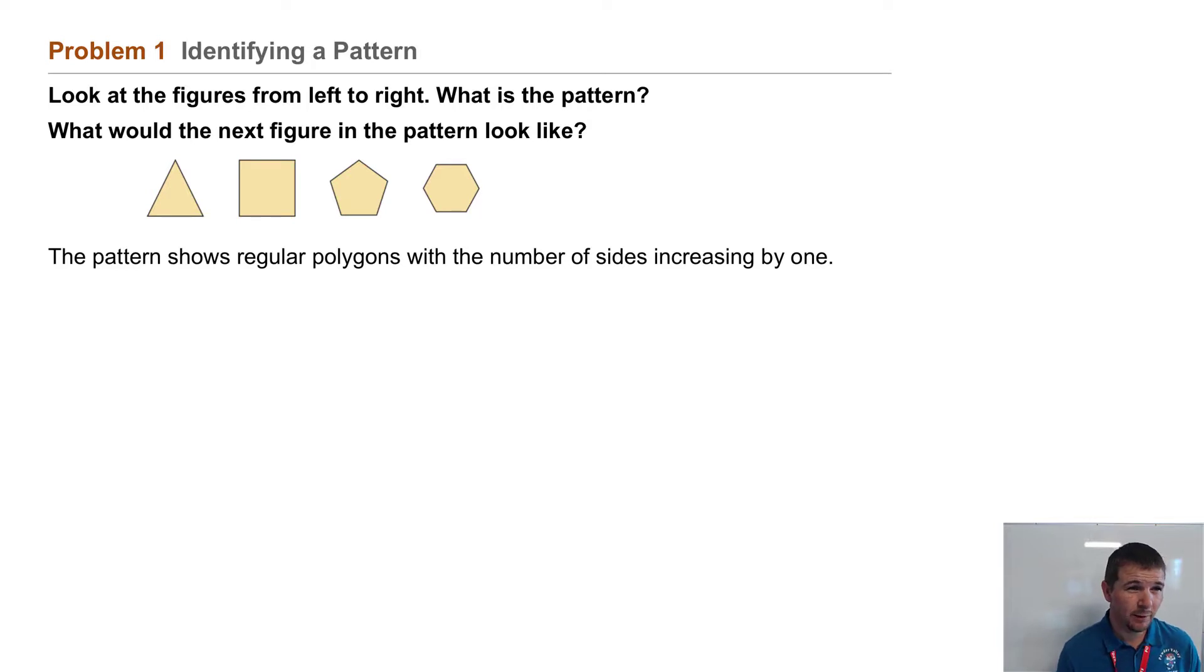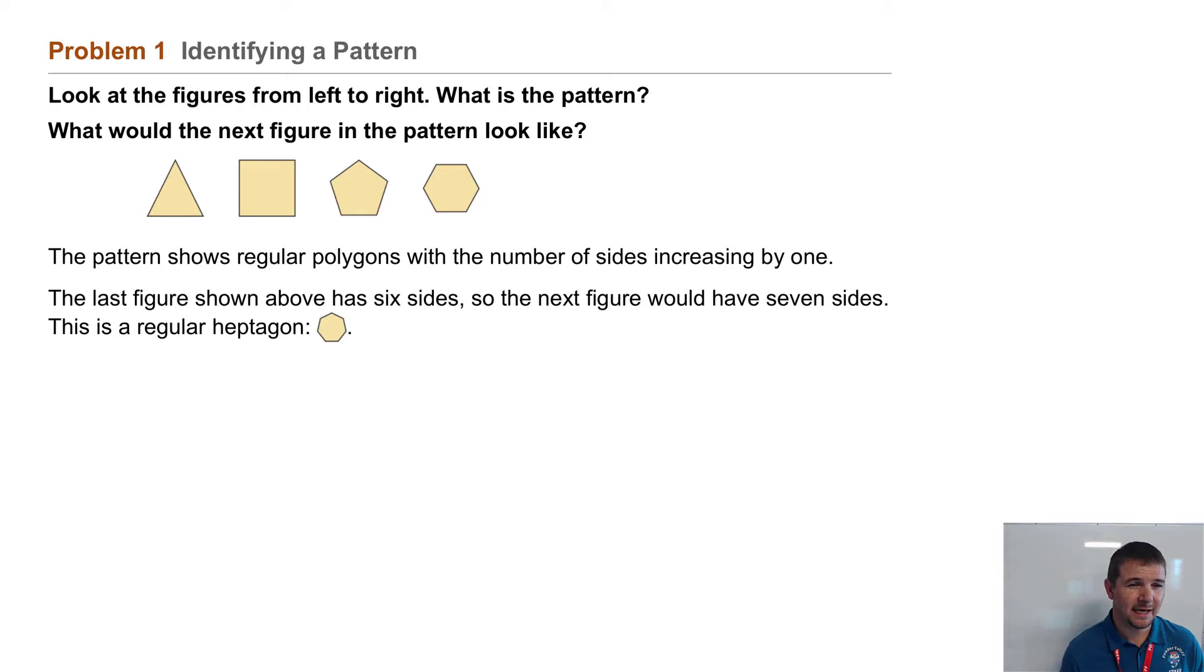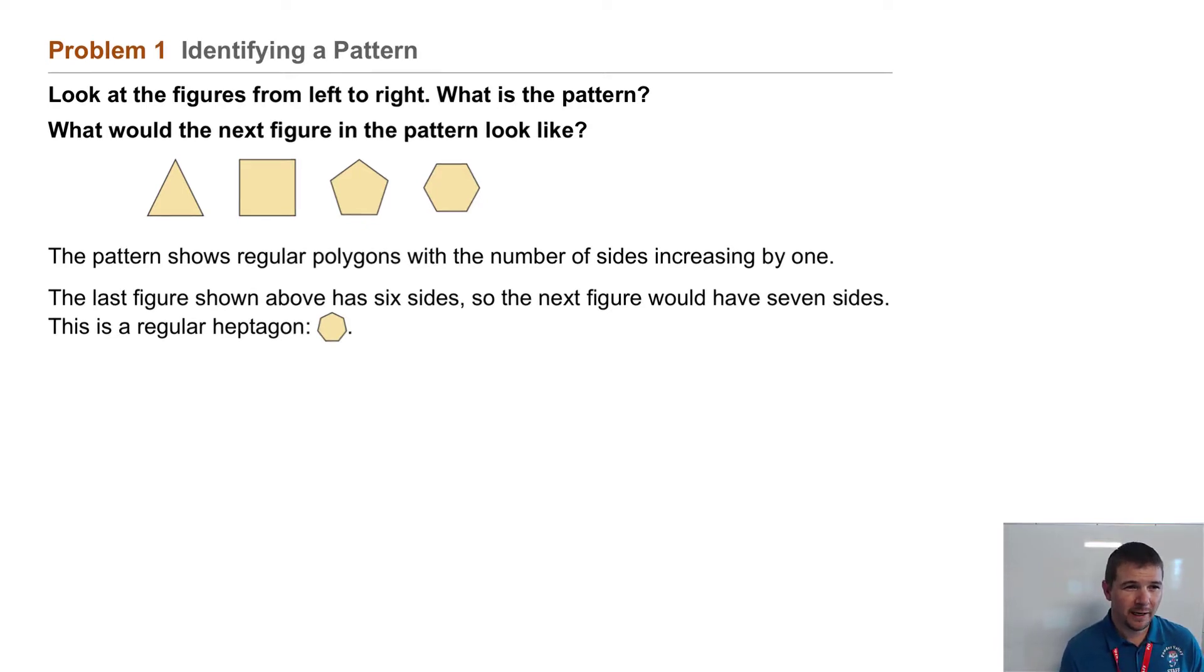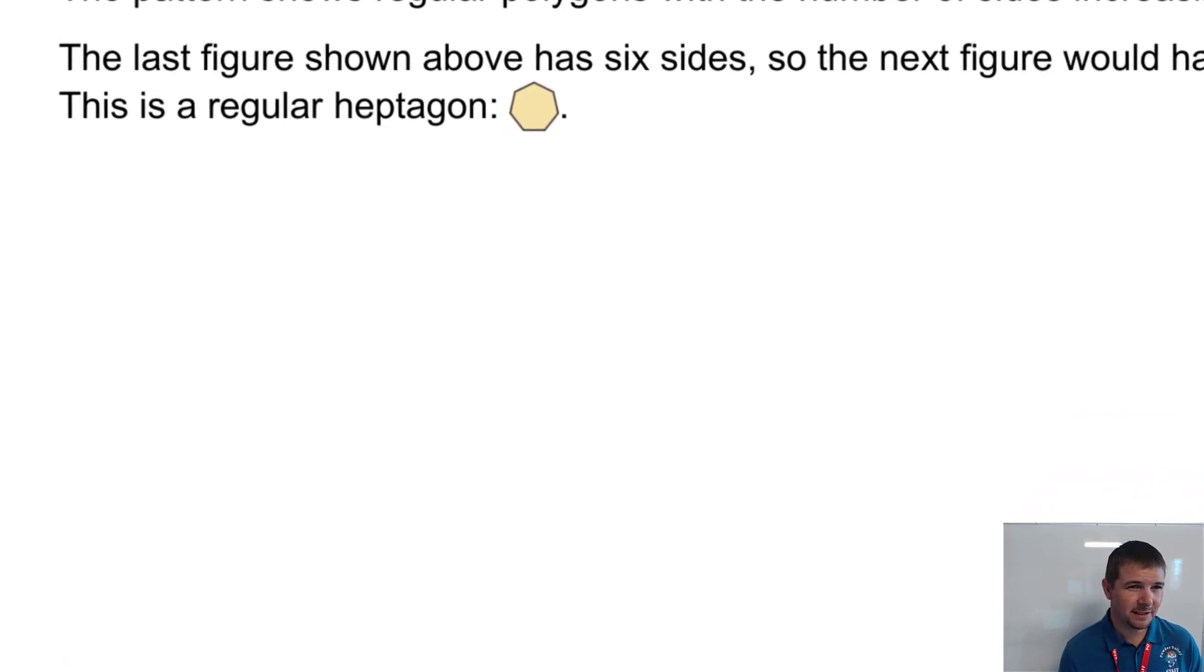The second question: what would the next figure in the pattern look like? The last figure shown above has 6 sides, so the next figure would have 7 sides. This is a regular heptagon, and here's the example.